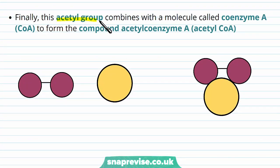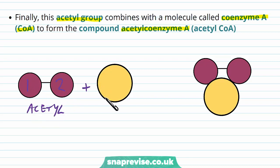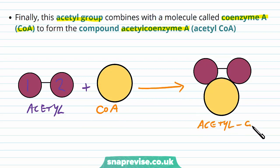At the end of this reaction, the acetyl group will combine with another molecule called coenzyme A, or CoA, and this forms the compound acetyl coenzyme A. So we've got our two-carbon acetyl, and it combines with coenzyme A to form acetyl CoA, or acetyl coenzyme A. So that's the end of the link reaction, and this will move into the next stage of respiration.